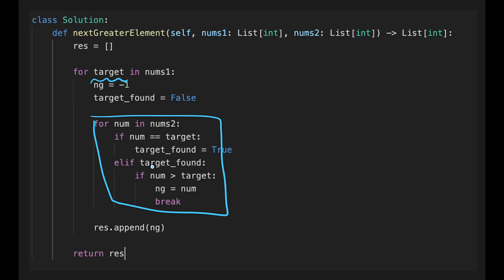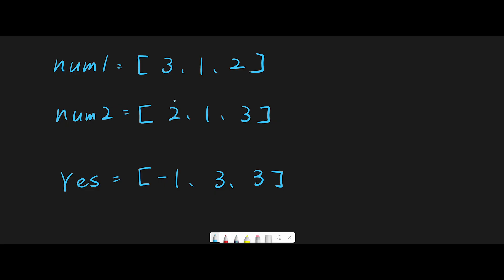My strategy is to use a stack to keep track of numbers we've already seen. Let's talk about the solution with a small example. nums1 is [3, 1, 2] and nums2 is [2, 1, 3]. The result should be [-1, 3, 3]. Let's go through it one by one.